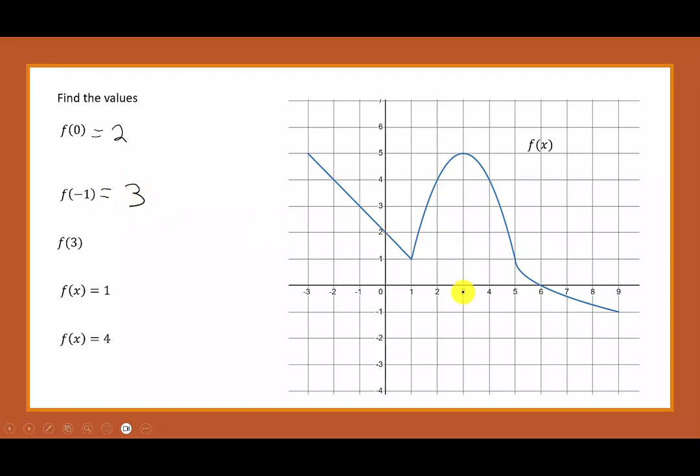When x is equal to 3, I locate the point on the graph, which this time it says it's at 5. This is f of 3 equals 5.